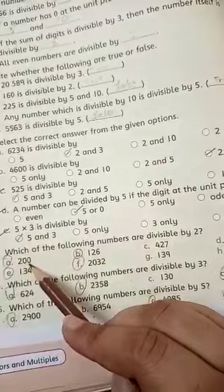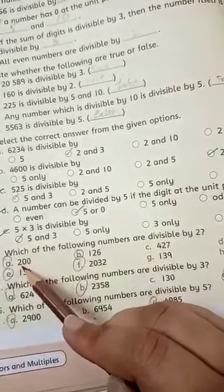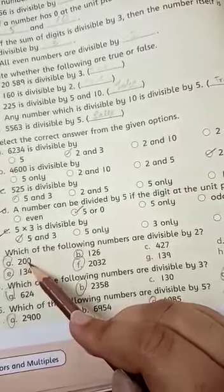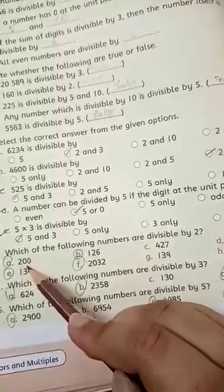This number will be divisible by 2 because 2 is an even number and 0 and 0, it will also be divisible by 2.